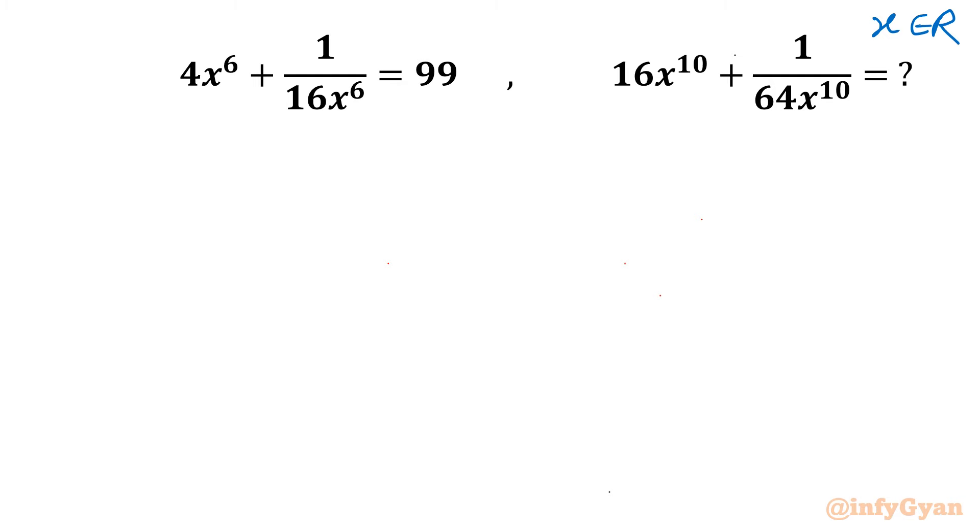So let's get started. I will start with a manipulation step. I will multiply the given equation on both sides by 2. So it will become 8x^6 plus 1 over 8x^6, and the right hand side would be 99 times 2 which is 198. Let me call this our equation number 1.